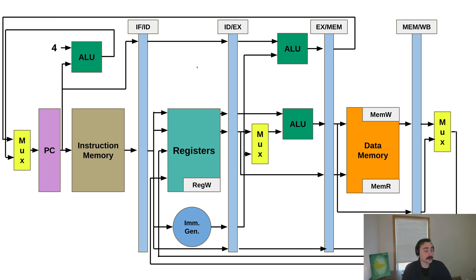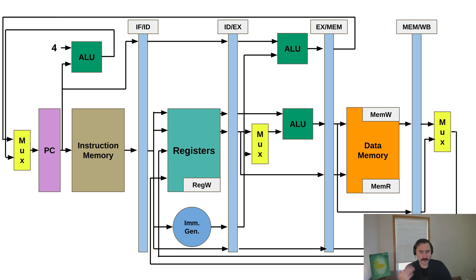These things we're going to call pipeline registers. Why exactly do we need these extra structures? Recall the main difference between pipelining and our single-cycle processor. With our single-cycle processor, an instruction has access to all of the hardware resources in a given cycle — it can access instruction memory, read the registers, do some sort of execution, maybe do something with the data memory, and then write back to the register file, all within the same cycle. We no longer have that with our multi-cycle implementation.